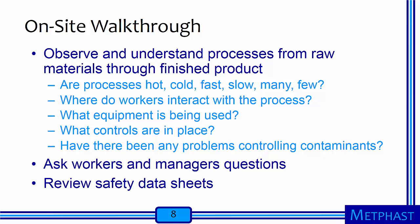An on-site walkthrough is a critical step in the anticipation and recognition process. A walkthrough allows you to observe and understand processes from raw materials through the finished product. Specific questions to answer during a walkthrough include: Is the process hot or cold? Fast or slow? Many or few? Where do the workers interact with the processes? What equipment is being used? Are there controls in place? Have there been any difficulties controlling contaminants? Ask plenty of questions of workers and managers, as they can offer a wealth of data on how things change from day to day. Finally, you should review safety data sheets.